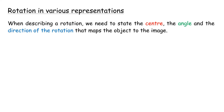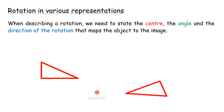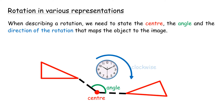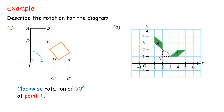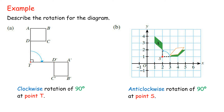When describing a rotation, we need to state the center, the angle, and the direction of the rotation that maps the object to the image. Example: Describe the rotation for the diagram. Solution: A. Clockwise rotation of 90 degrees at point T. B. Anticlockwise rotation of 90 degrees at point S.